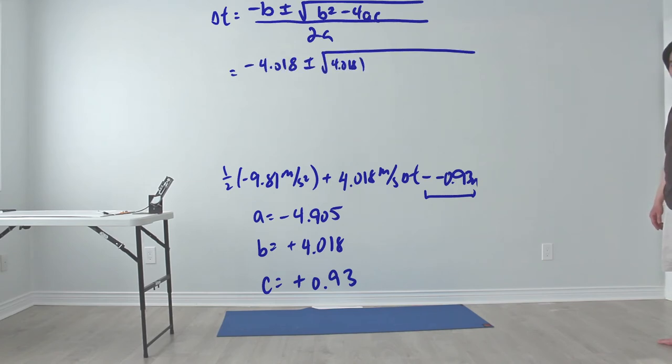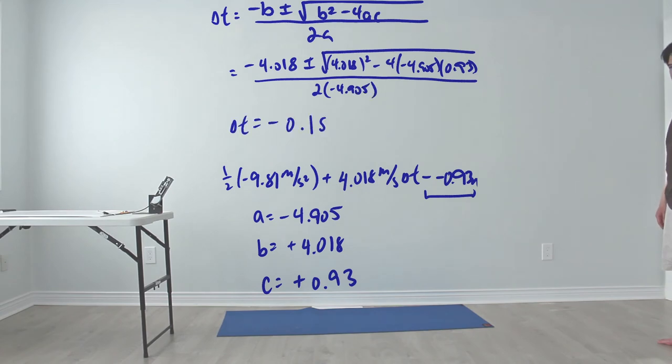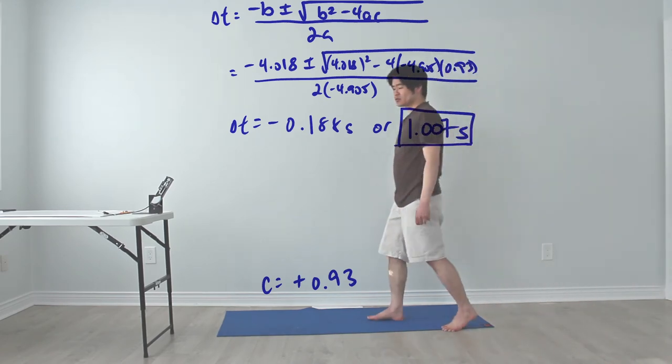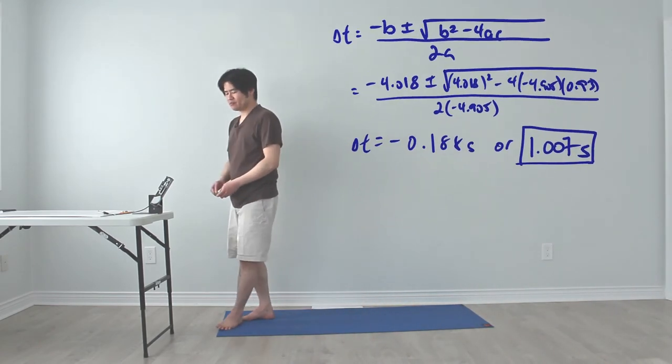After subbing the values into the quadratic formula, we find out that delta t is either equal to negative 0.188 seconds or 1.007 seconds. Obviously, we're not going to use the negative time, so we're going to focus on the positive time for it to travel.